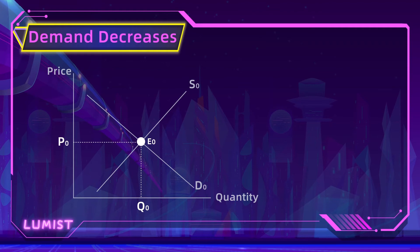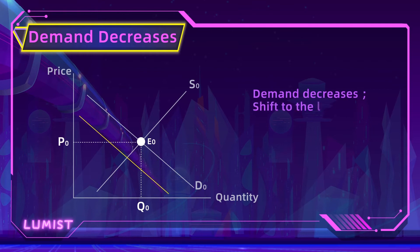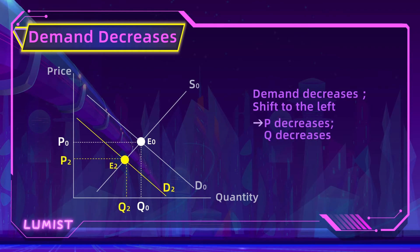Let's take a look at the opposite scenario — when demand decreases. Maybe there are fewer consumers in the market, or maybe their preference is now lower. As demand decreases, it shifts towards the left, and we now have a new equilibrium point at E2, with a corresponding price P2 and quantity Q2, both of which are lower than the old equilibrium point.